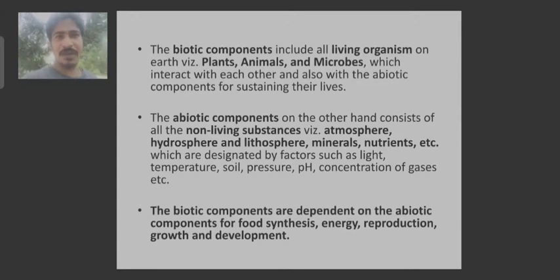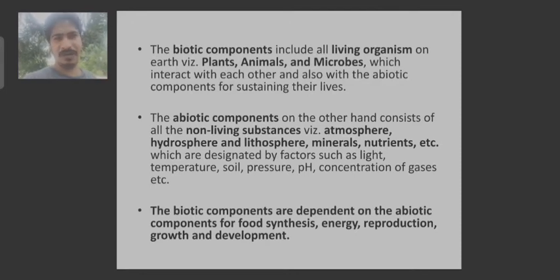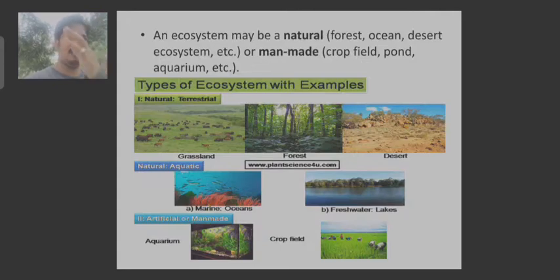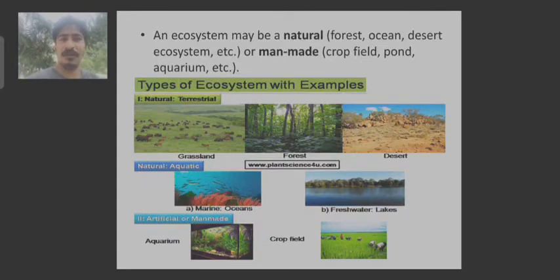If the plants are not able to produce food, then the consumers will not be able to survive. An ecosystem may be natural — for example, forest, ocean or desert ecosystem — or man-made, such as crop field, pond, aquarium, etc.